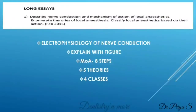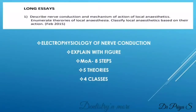The first question is to describe nerve conduction, mechanism of action of local anesthetics, the theories of local anesthesia, and classification of local anesthetics based on their action. Here you can explain the electrophysiology of nerve conduction with four figures which has been given in the textbook. That forms the first part of your answer.